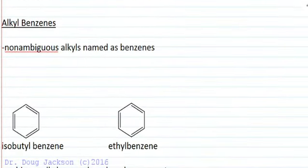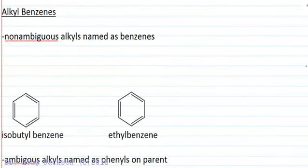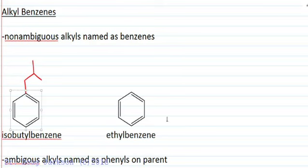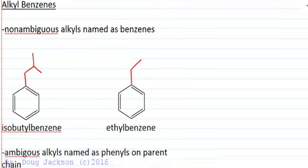If they're alkyl groups on the monosubstituted benzene, if they're non-ambiguous groups you can still name as a benzene. So isobutylbenzene, one, two, three, four carbons, isobutyl, there's no ambiguity about what butyl we're talking about. It's isobutyl. And then ethylbenzene is also non-ambiguous because we can attach to either position of an ethyl group and it is the one position no matter which carbon we attach to.